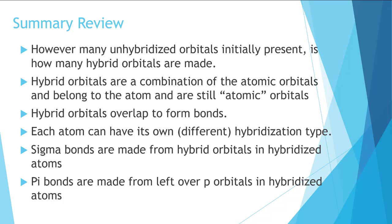Hybrid orbitals overlap with each other to form bonds or with s and p orbitals, of course, as well. Each atom can have its own different hybridization type within a molecule. So we'll look at an example of that in a moment.